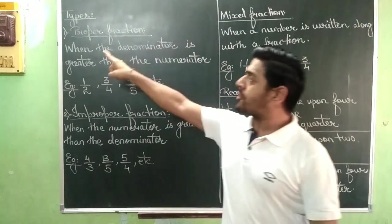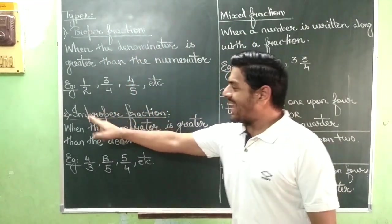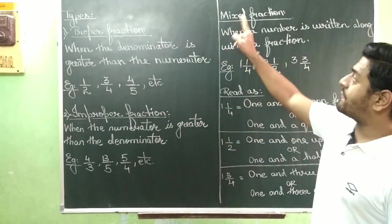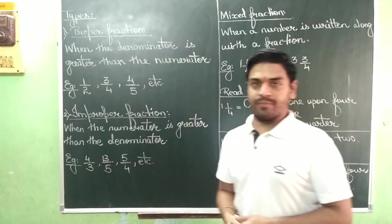They are: 1. Proper fraction, 2. Improper fraction, and 3. Mixed fraction. Clear?